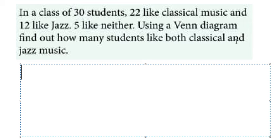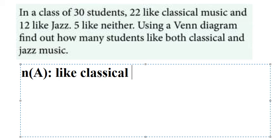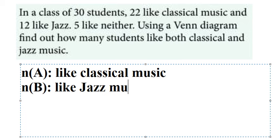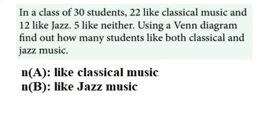So now I will show you how to answer. I will put A, that is about the students who like classical music, and B, that's about students who like jazz music. Now we can use a Venn diagram here.